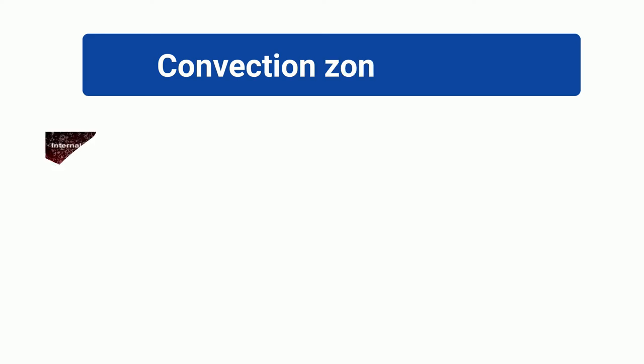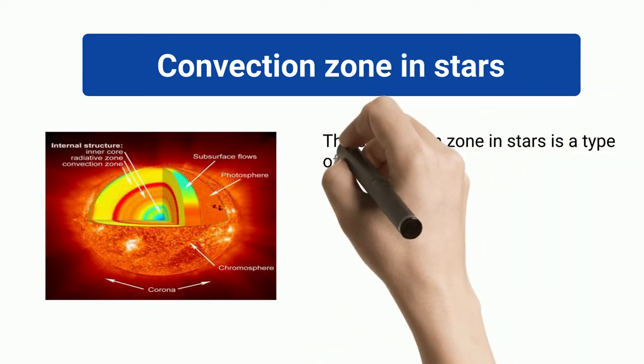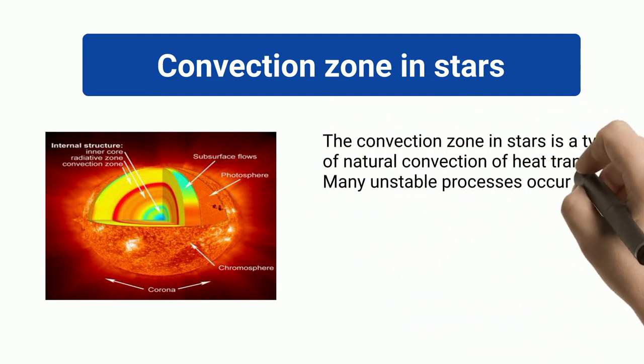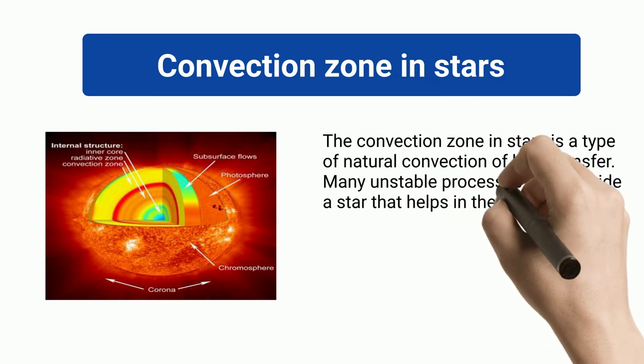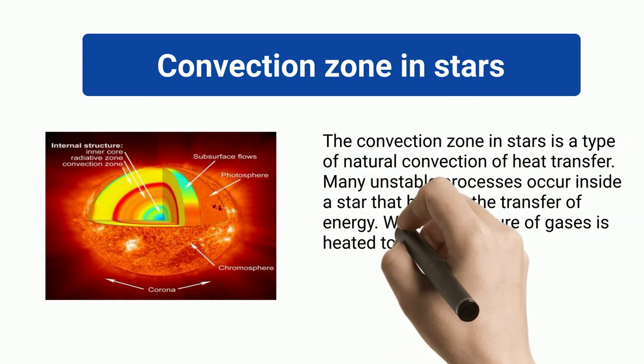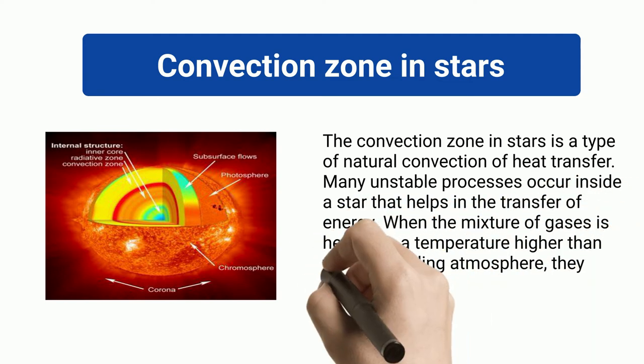Convection Zone in Stars: The convection zone in stars is a type of natural convection of heat transfer. Many unstable processes occur inside a star that helps in the transfer of energy. When the mixture of gases is heated to a temperature higher than the surrounding atmosphere, they expand and cool after some time.